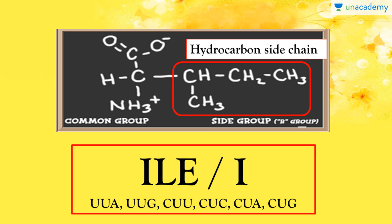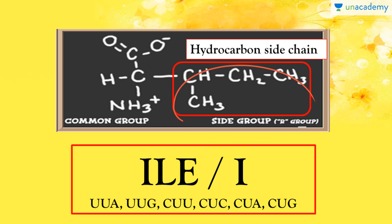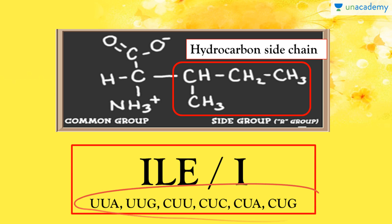This is the chemical formula for isoleucine. It contains a hydrocarbon side chain which is isobutyl or secondary butyl in nature. It can be abbreviated as ILE, the one-letter code is I, and these are all the codons which genetically code for isoleucine.